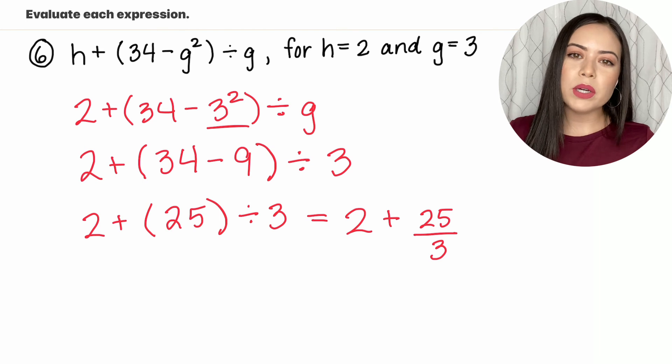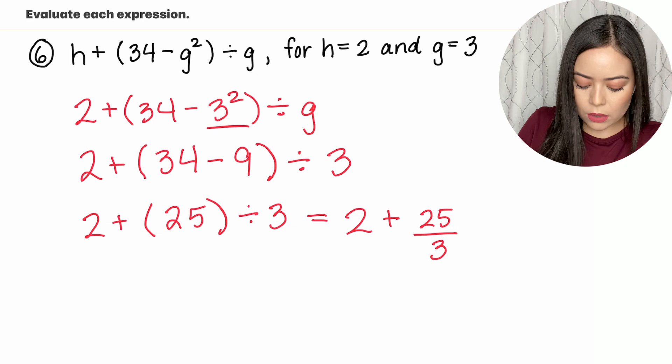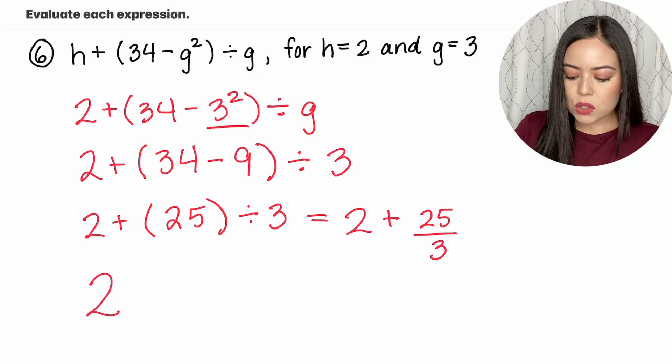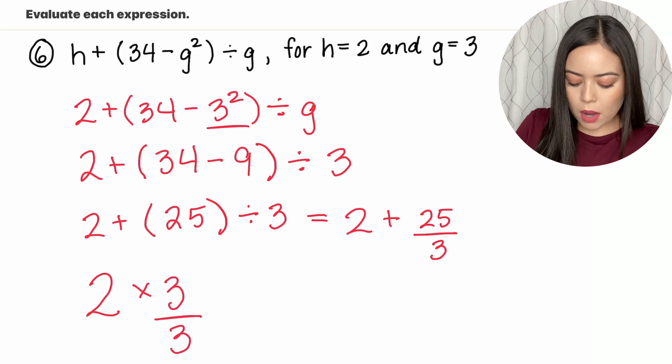So now we have a whole number and an improper fraction being added together. But as we know we always need to add with the same denominator. So that means the 2 has to be rewritten to have a 3 as a denominator. So let's take that over here. So if we want to have 3 in the denominator that means we need to multiply 3 to top and bottom of 2.